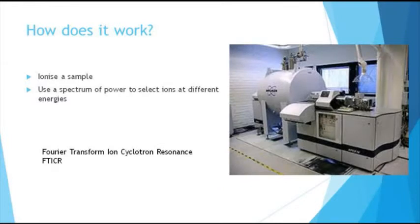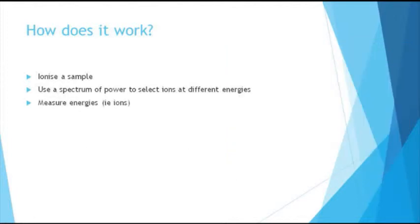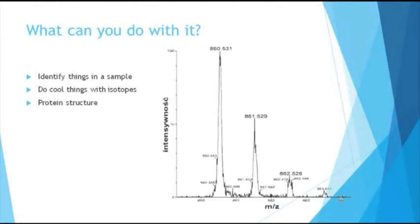However, the current state of the art, or at least it was when I stopped sciencing, was the Fourier transform internal cyclotron resonance, which is basically a particle accelerator. So you blitz your sample, stick it into the particle accelerator it whizzes through, and then you can select particles coming out. And that's incredibly accurate. It lets you really determine very small differences.